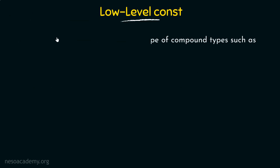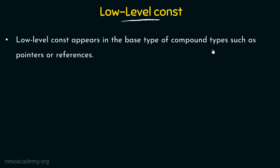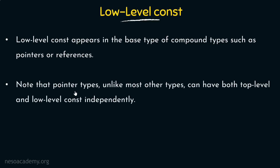Low-level constants appear in the base type of a compound type, such as pointers or references. Low-level appears in the base type of compound types. When we discussed pointers, we said that pointers can point to objects which are constants — the base type of the compound type is telling us what kind of objects that pointer is pointing to. Those kinds of constants are known as low-level constants, and they can appear in case of pointers as well as references. In case of references, they are always low-level, as we will see. Note that pointer types, unlike most other types, can have both top-level and low-level constants independently.